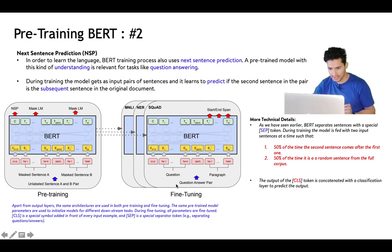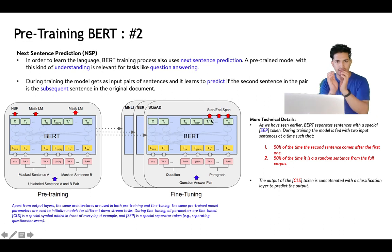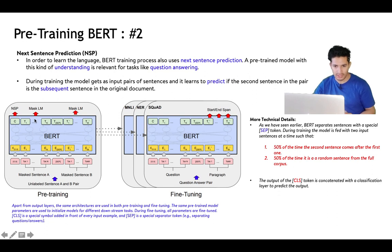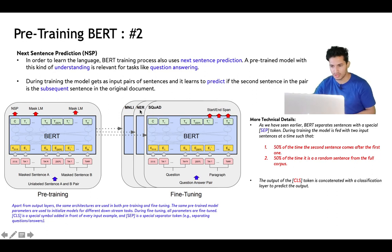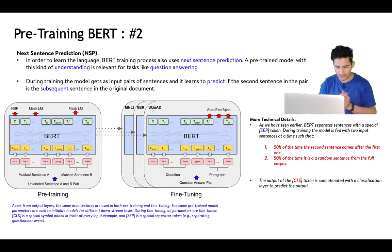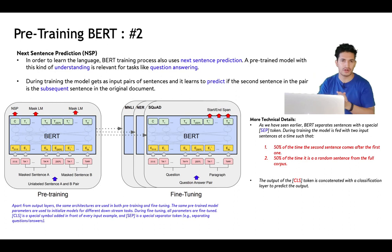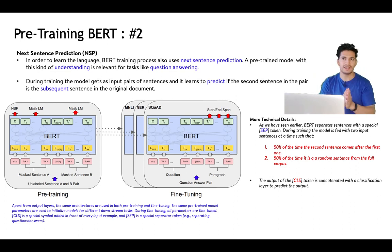This is a fine-tuning task called SQuAD. Once pre-trained on masked language modeling and next sentence prediction, BERT can be quickly fine-tuned for tasks like SQuAD or Named Entity Recognition. Learning all this on the Wikipedia corpus makes BERT so powerful that it can be fine-tuned for any NLP task and produce state-of-the-art results.